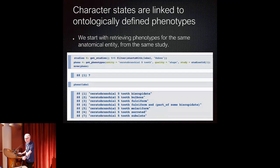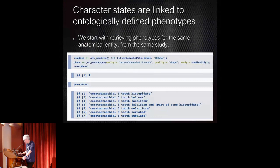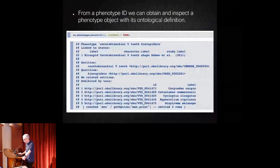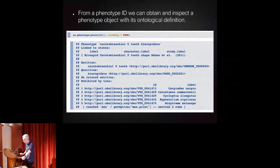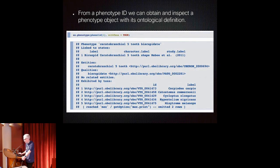So that returns a data frame, which is one of the most common data structures in R. And we can look at some of the labels here that are human readable. I'm not showing the IRIs. They're not really human intelligible. But more importantly here, what I want to get to is that every one of these phenotypes, here I'm showing just one, I can turn into an object, and that has all the links to ontology terms. So here's the character state that it's linked to. It's the bicuspid state, the state labeled bicuspid for the character ceratobranchial five tooth shape, from the study.